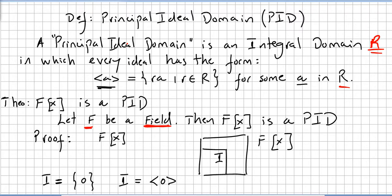This video is still in the chapter of polynomial rings and we are going to get directly into a very important concept: the definition of principal ideal domain, which we usually write as PID.